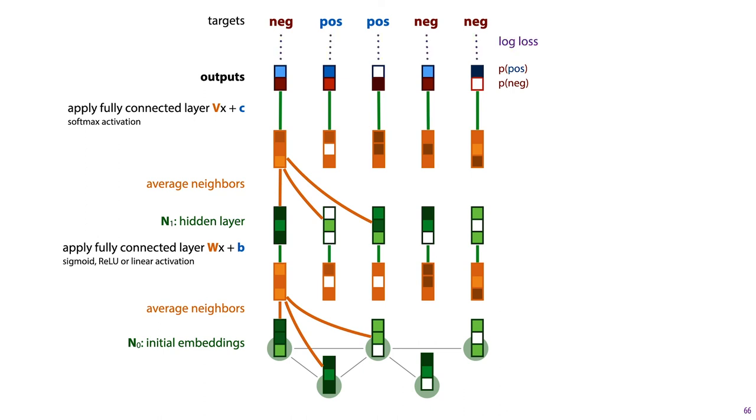We can compare these to our target labels to give us a logarithmic loss, which we sum over all the nodes and back-propagate. And in that back-propagation, we train both the parameters of our fully connected layers, V, W, B and C, and the values of our initial node embeddings N0.